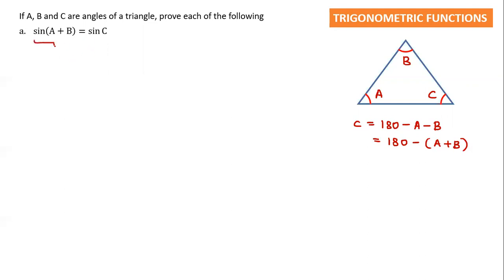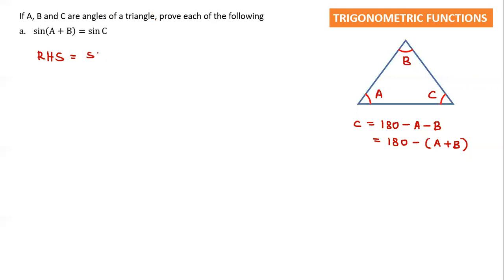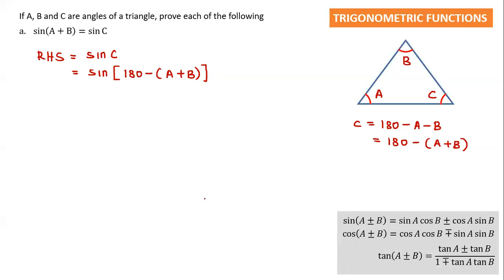This is your left hand side and this is the right hand side. We have two sides: left hand side and right hand side. We're going to start from the right hand side. The right hand side is sine C. You should know that C is 180 minus (A plus B), so we're going to use the sine subtraction formula.